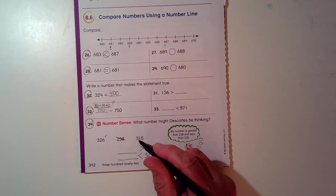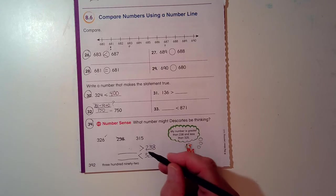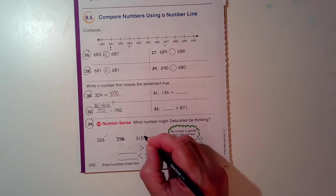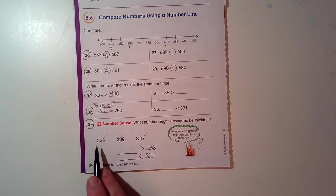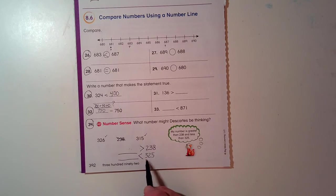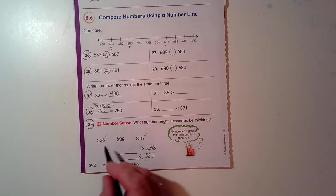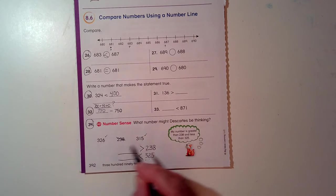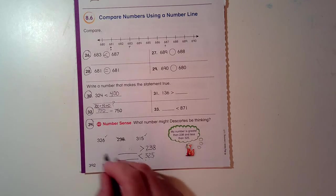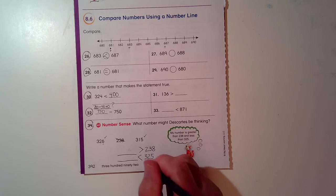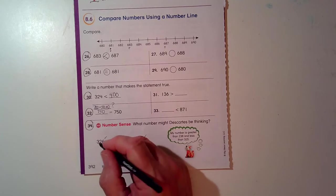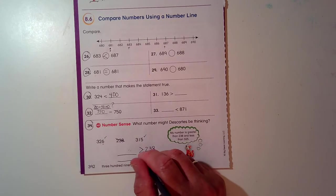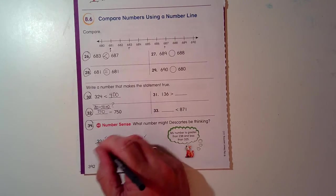It's got to be greater than 238. Three hundreds and two hundreds, so it is greater than. Now, let's look over here. It's got to be less than 325. Three hundreds, three hundreds. Two tens, two tens. Six ones, five ones. It's greater than. So this is greater than the 325, and we need it to be less than. That won't work.